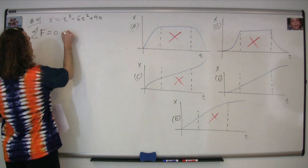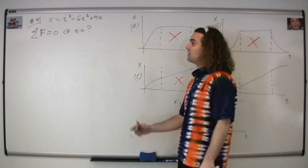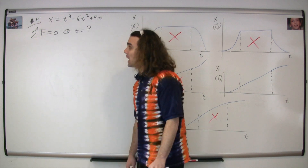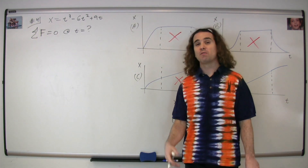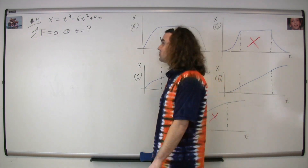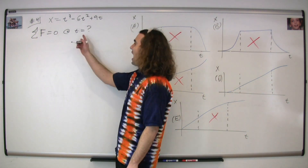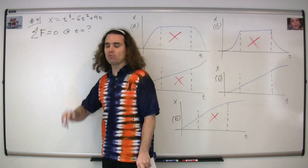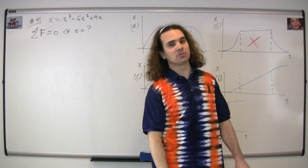Question number four. We're given the position as a function of time for a locomotive, a train, moving along a straight track. And the question is, at what time will the net force on this train be equal to zero?